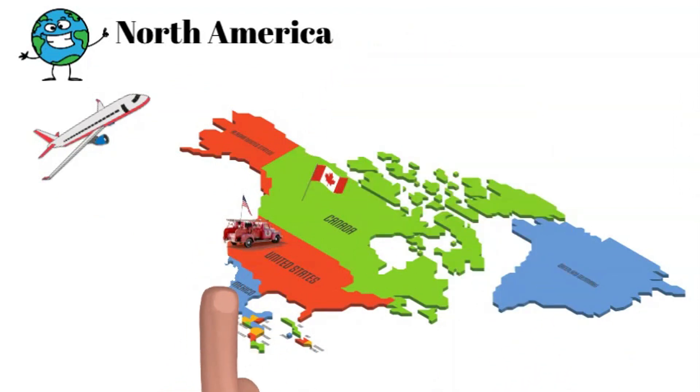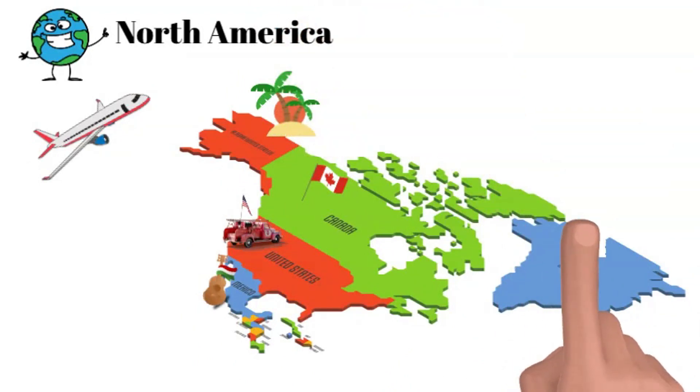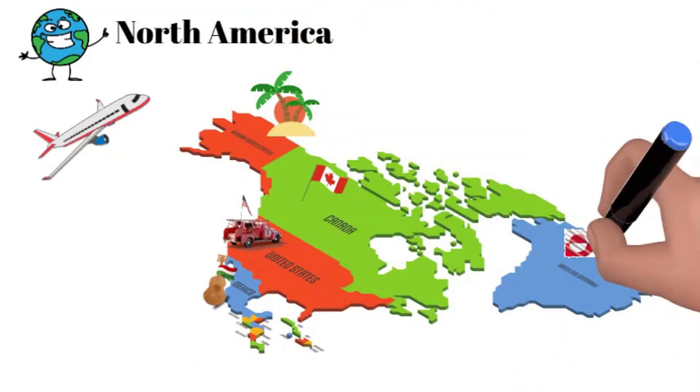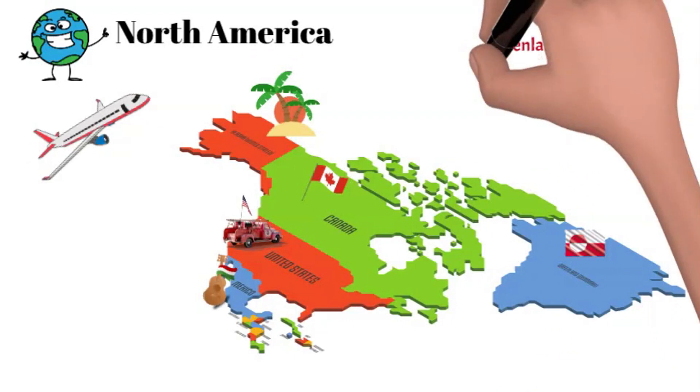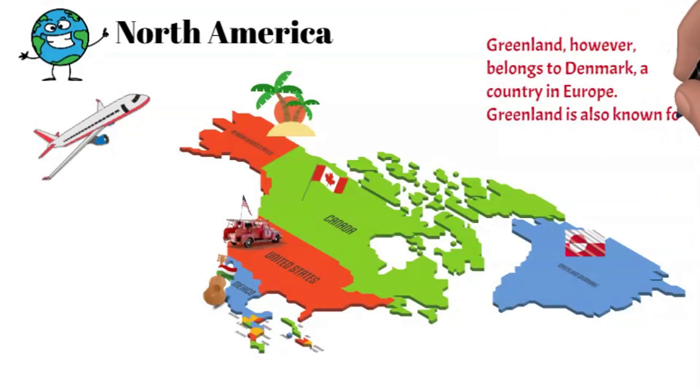Mexico, the Caribbean islands, and various other countries. The world's largest island Greenland is located on the North American continent. Greenland, however, belongs to Denmark, a country in Europe. Greenland is also known for the northernmost place in the world.